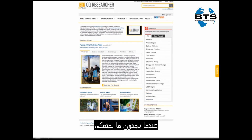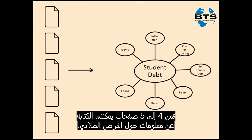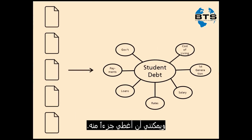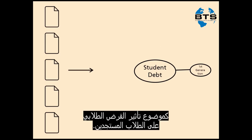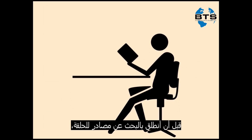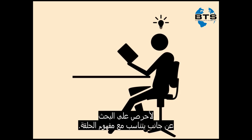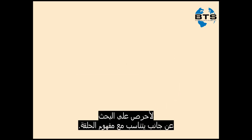Once you find something that interests you, think about the scope of your paper. In 4-5 pages, I can't cover the entire topic of student debt, but I could cover a particular aspect of it, like the effect of student debt on first-generation college students. Before I can launch into searching for sources for my paper, I probably should do some more reading to understand the topic a bit better and make sure that I'm looking at an aspect of it that works within the scope of my paper.